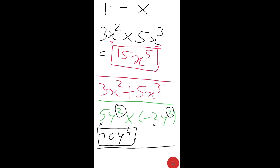In multiplication we add the indices. In the case of addition, we do not add the indices. For example, 5y² + 2y²: we add the coefficients, 5 + 2 = 7, and write y² as it is, giving 7y². This is the key difference — in multiplication we add the indices, while in addition or subtraction we write the variable with its index as it is.